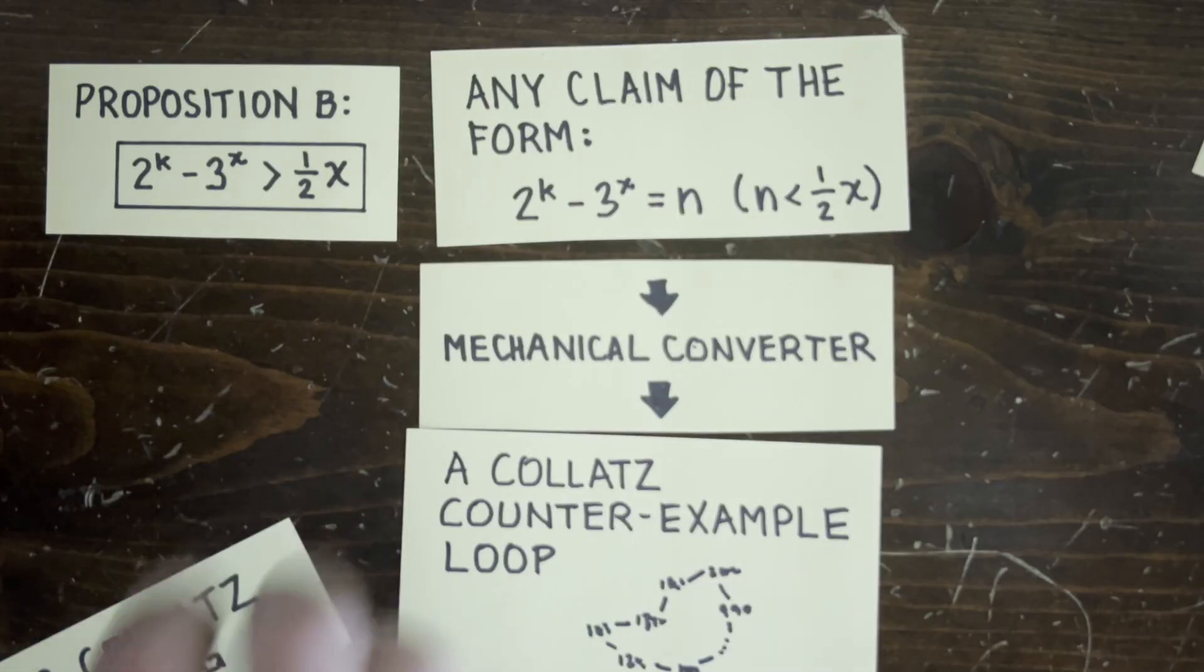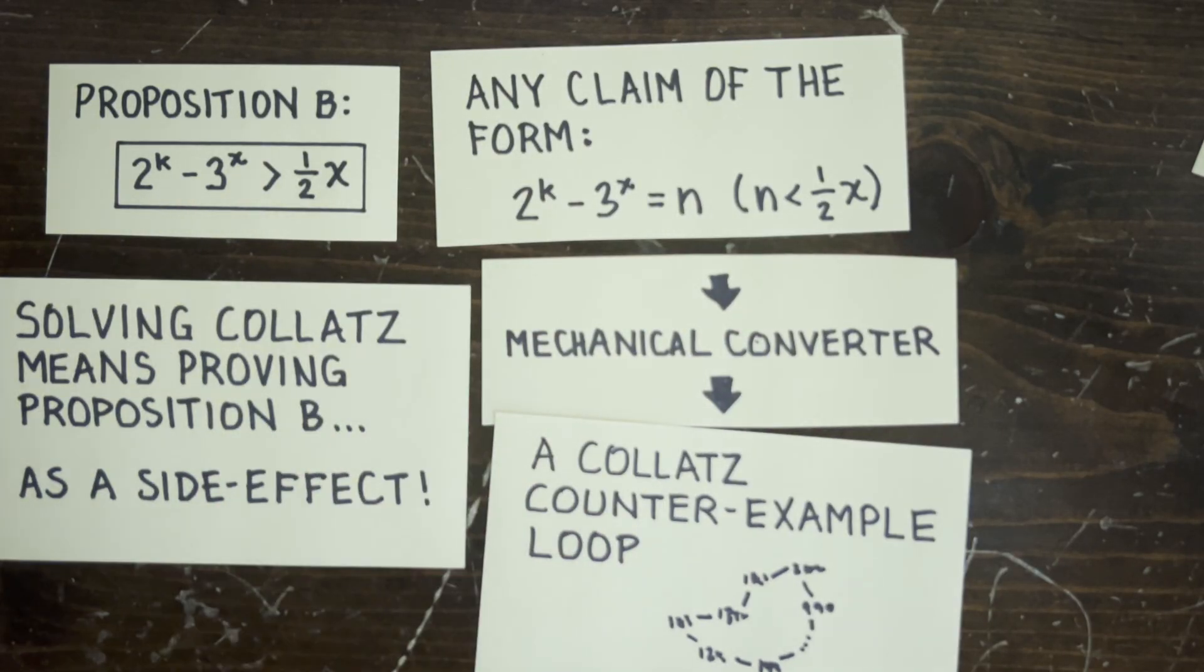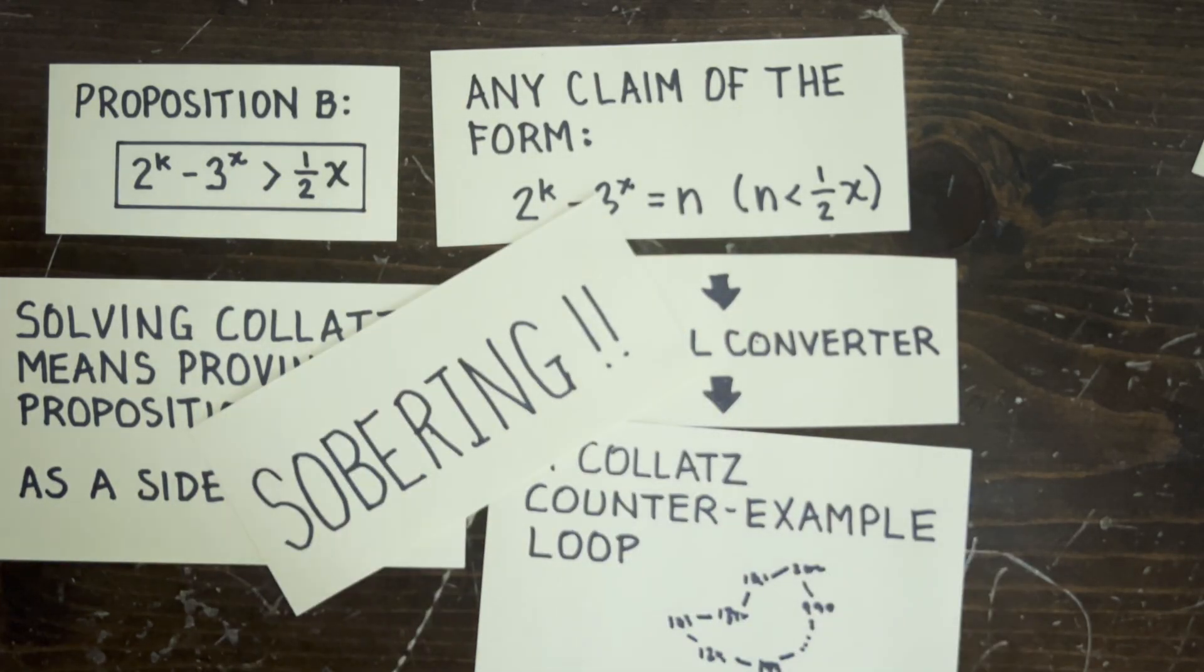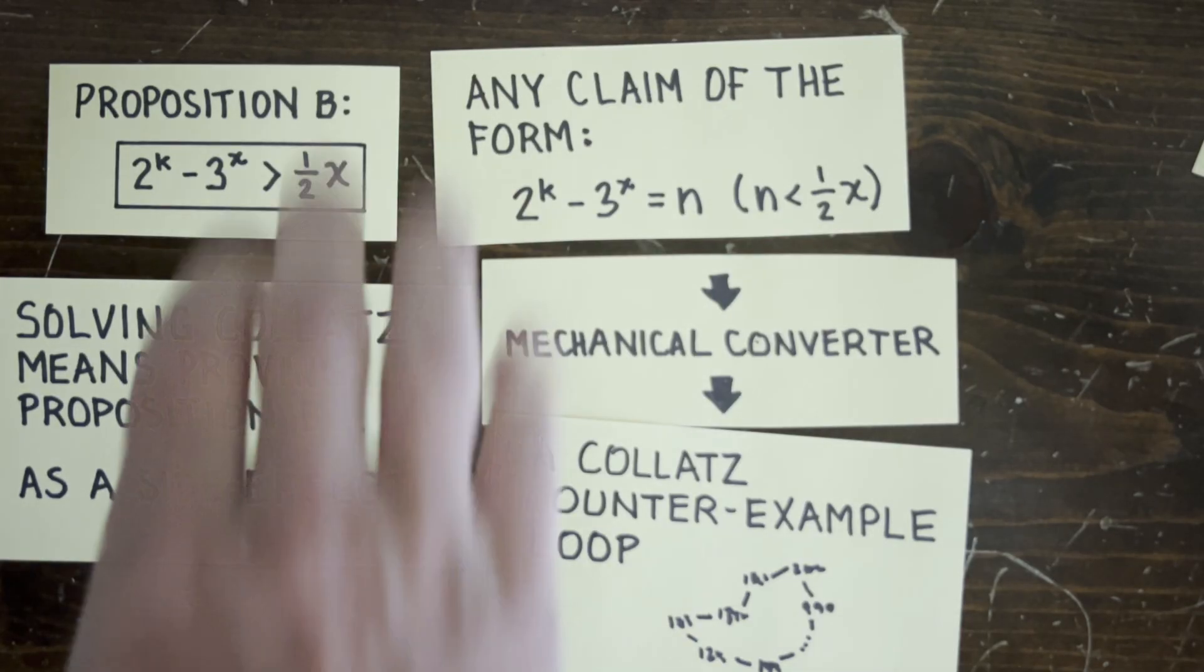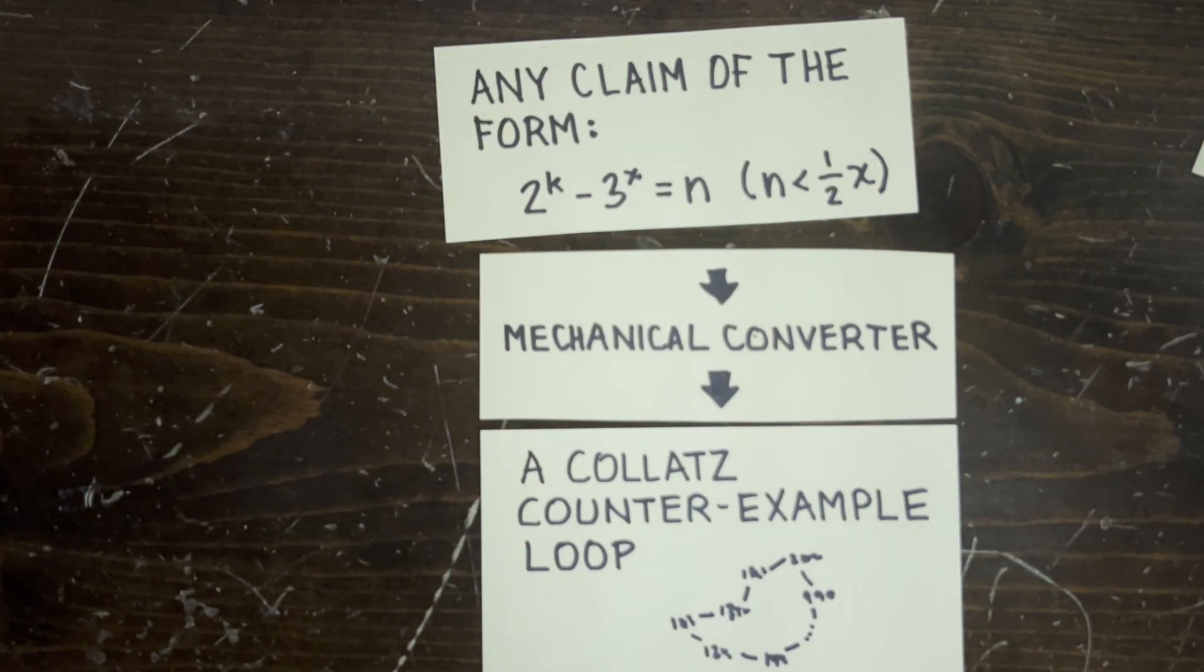So, this is sobering because if you're working on Collatz and you've never heard of Proposition B, you're necessarily going to have to invent or reinvent some method to solve it, which is a feat that would have earned you a Fields Medal in the 1960s. So, let's understand how Tao converts a claim like this into a Collatz loop like this.